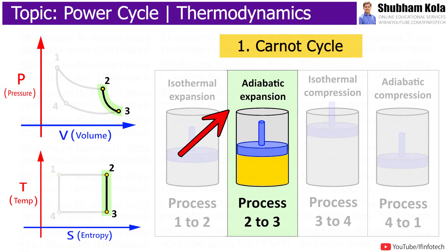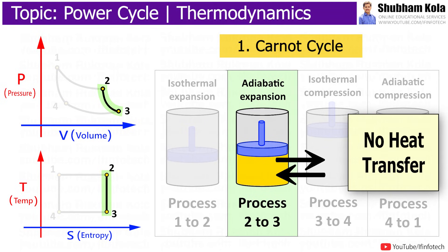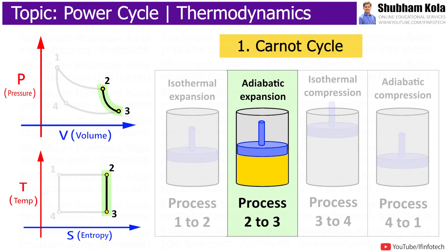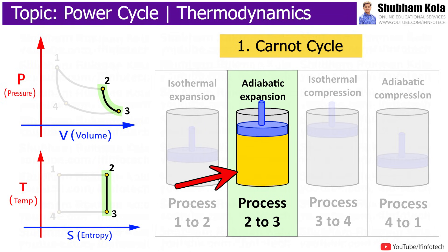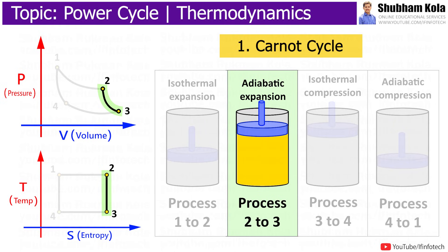Process 2 to 3 is the reversible adiabatic expansion process. Adiabatic means there is no heat transfer between the surroundings and the system because the system is thermally insulated. During this process, the gas continues to expand, increasing volume and decreasing pressure, doing work on the surroundings. The temperature lowers from TH to T1.